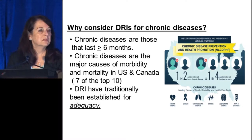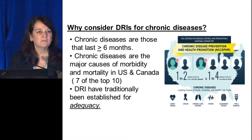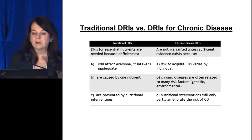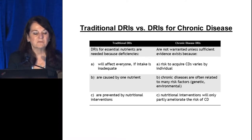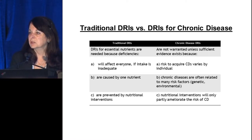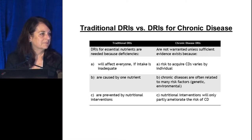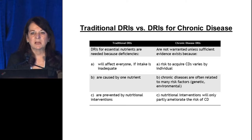DRIs have traditionally been established for adequacy, so this is really moving into a new realm. Traditional DRIs cover essential nutrients because deficiencies affect everyone if intake is inadequate — caused by one nutrient and prevented by nutritional intervention. For example, iron deficiency anemia: if every individual doesn't get sufficient iron in the diet, they become iron deficient anemic, and the problem is solved by giving iron. Similarly, a severe deficiency of vitamin C causes scurvy, and adding vitamin C back into the diet resolves it.